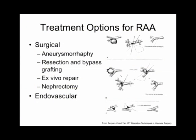Treatment options include both surgical and endovascular techniques. Surgical treatment can involve aneurysmorrhaphy — surgical removal of the aneurysm and repair of the artery, either primary repair or, more commonly, vein patch angioplasty. The distal location of many aneurysms makes surgery difficult without removing the kidney for ex vivo back-bench repair. Because of this, surgical treatment historically for many patients has been nephrectomy. There are a variety of endovascular techniques as well.